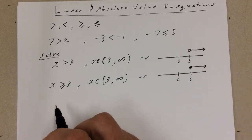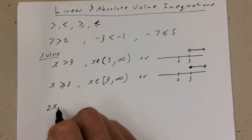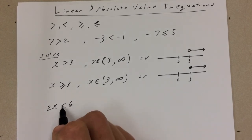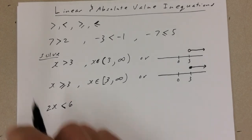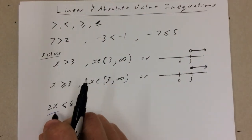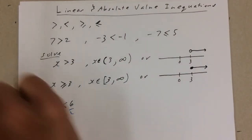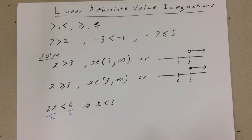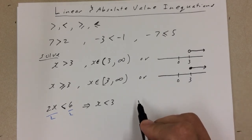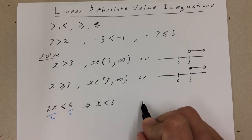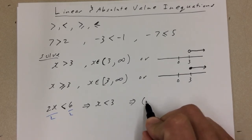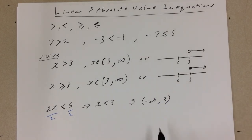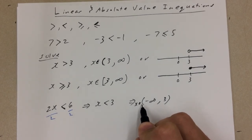If we had to solve something like 2x is less than 6, we do the same thing as with normal equations — divide both sides by 2, and that implies x is less than 3. In interval notation, that would be negative infinity to 3, with round brackets.